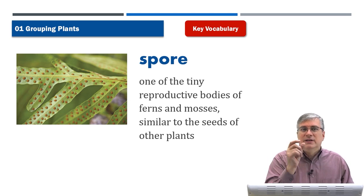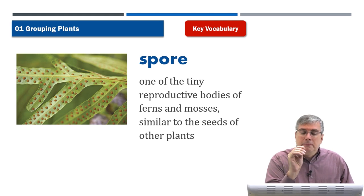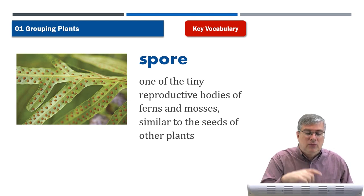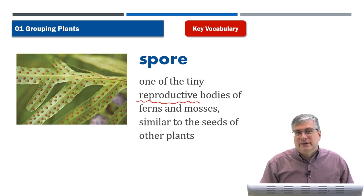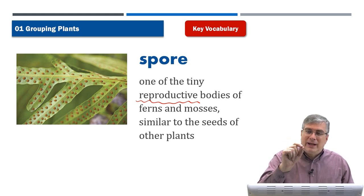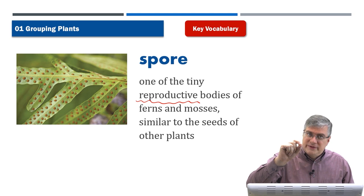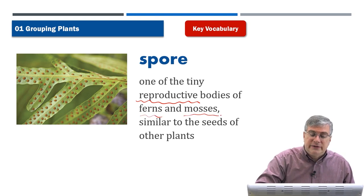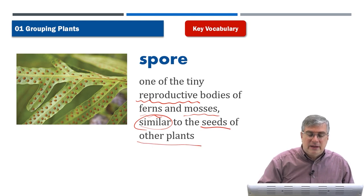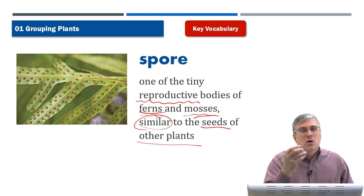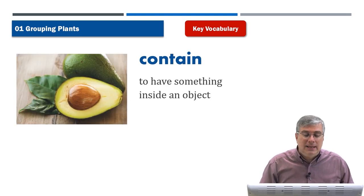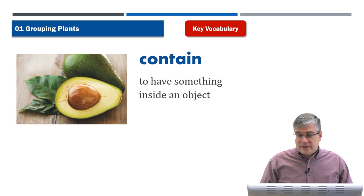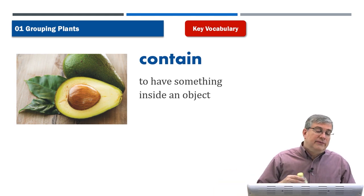Now, 'spore.' Many plants produce seeds, but some plants don't create seeds — they create spores. A spore is a tiny reproductive body. 'Reproductive' means a new organism can grow from it. Just as an apple seed can grow into a new apple tree, a new fern can grow from a fern spore. Spores are the reproductive bodies of ferns and mosses, similar to the seeds of other plants.